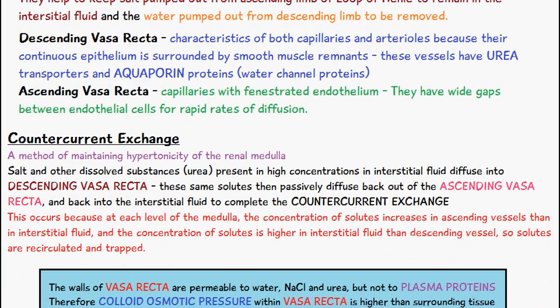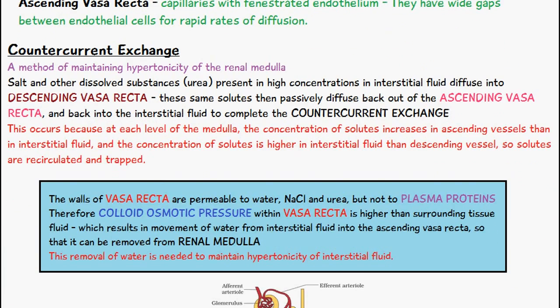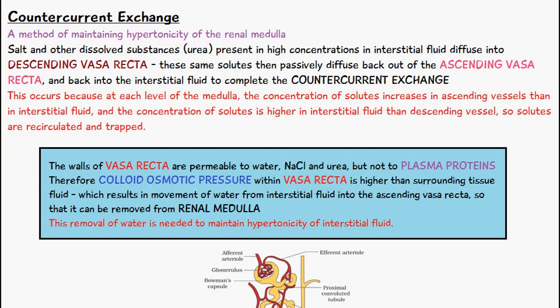Now let's talk about countercurrent exchange, which is a method of maintaining hypertonicity of the renal medulla. Salt and other dissolved substances such as urea are present in high concentrations in the interstitial fluid and diffuse into the descending vasa recta. These same solutes then passively diffuse back out of the ascending vasa recta into the interstitial fluid to complete the countercurrent exchange. This occurs because at each level of the medulla, solute concentration is higher in the ascending vessels than the interstitial fluid, and higher in the interstitial fluid than the descending vessel — so solutes are recirculated and trapped.